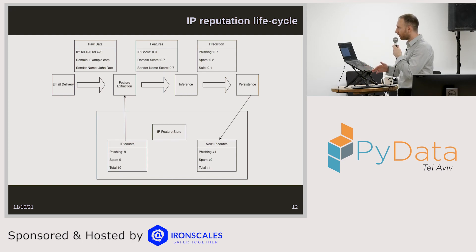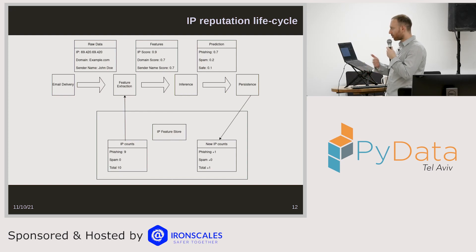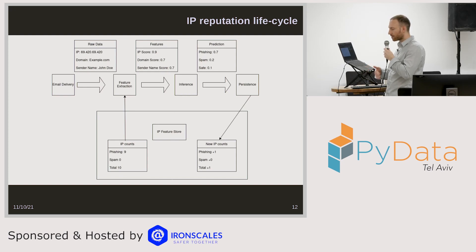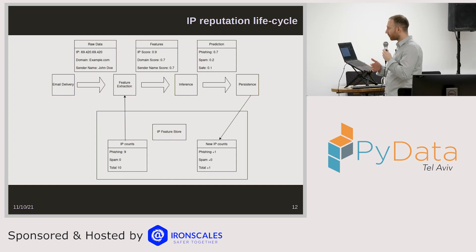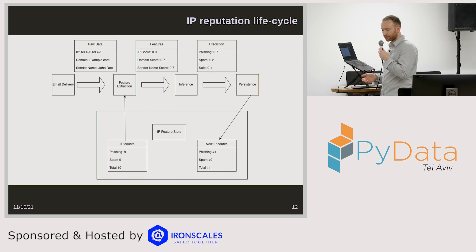Let me walk through this again. The raw data coming in is the IP address — 69420, for example. We extract the IP score for that IP address by querying our feature store. Imagine the feature store returns a score of 0.9, meaning we've seen this IP 10 times and nine of them are marked as phishing. Then we map that to a prediction: we send it to inference, and they say 70% probability of phishing based on these scores. We then save the predictions so we can use them as input for further emails. If we think it's phishing, this IP is now more suspicious in the future.